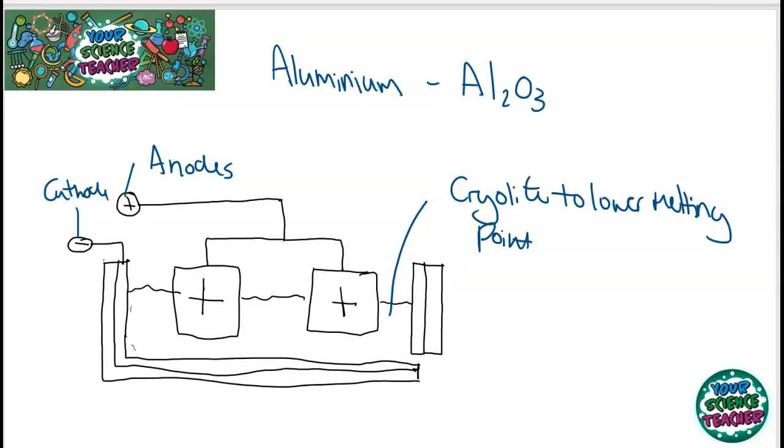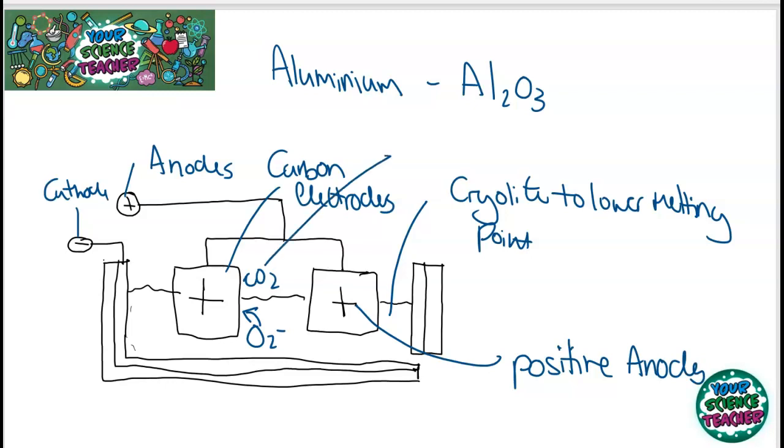Now, the extraction of aluminium oxide isn't that great for the environment. It does have a few setbacks. These carbon electrodes react with the oxygen produced because the O2- is going to be attracted to here. These carbon electrodes will actually burn away when it produces CO2. So the positive anodes constantly need replacing and it's producing CO2. We know from experience that CO2 is a greenhouse gas, and greenhouse gases are bad for the environment as they can cause global warming through the greenhouse effect.